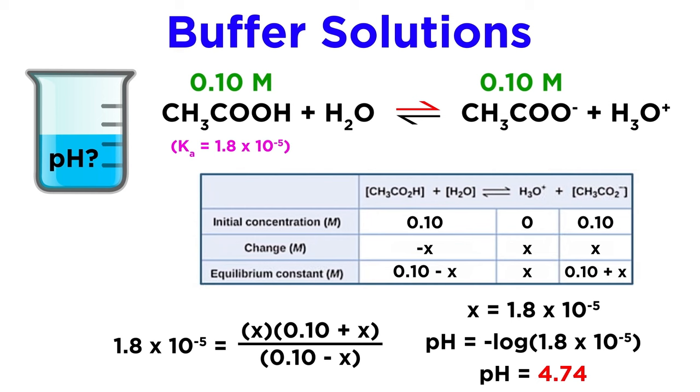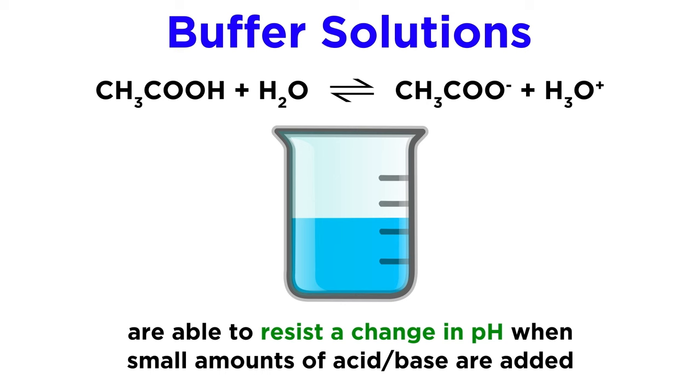So by applying our knowledge of acid-base equilibria, we can understand how a buffer solution is able to maintain a constant pH value. So as we can see, buffer solutions are able to resist a change in pH when small amounts of strong acid or base are added to them due to the equilibrium that exists between the weak acid or base and its conjugate.